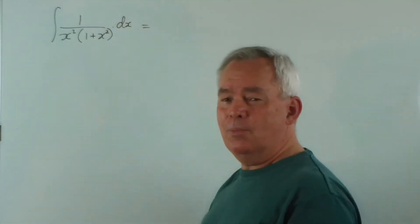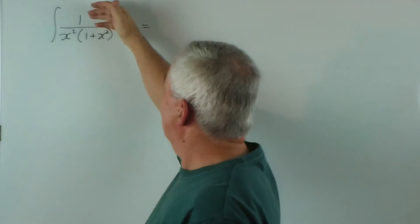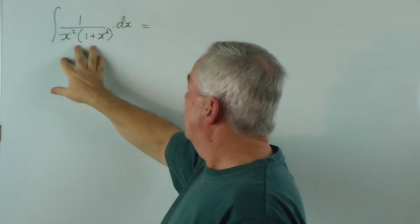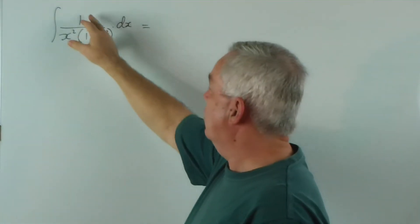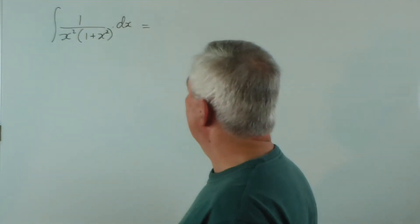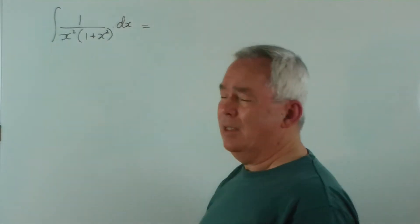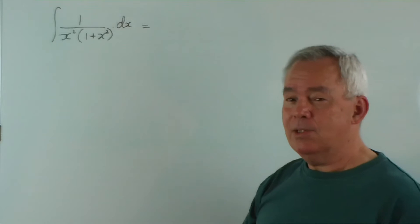Not very different from the one previous to it. It has a polynomial divided by another polynomial. The one in the denominator has considerably higher order than the one in the numerator. And you notice it's already factorised, and therein lies the hint.